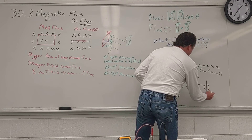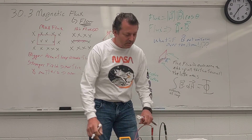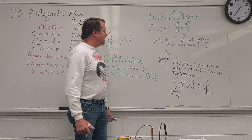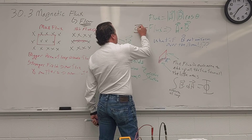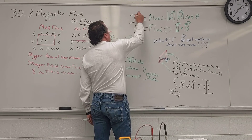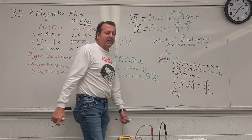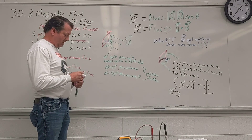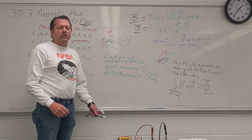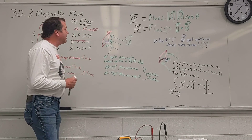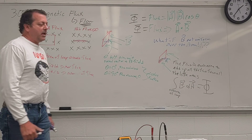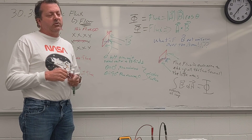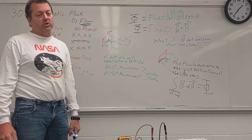The symbol for flux is capital Phi. That's going to be flux. It's written with a big circle through it — not a little piece, but a big circle. Flux: how much something goes through something else. This is magnetic flux, and it's going to be very important in the next section on how much we induce a current.